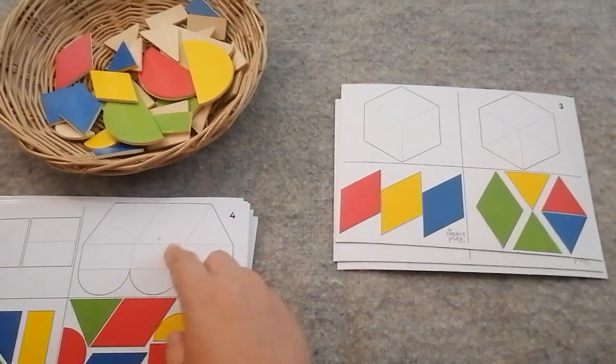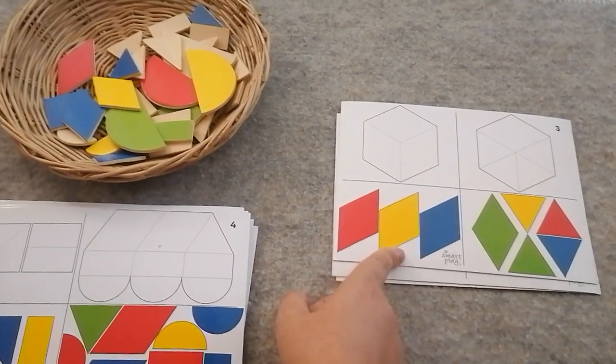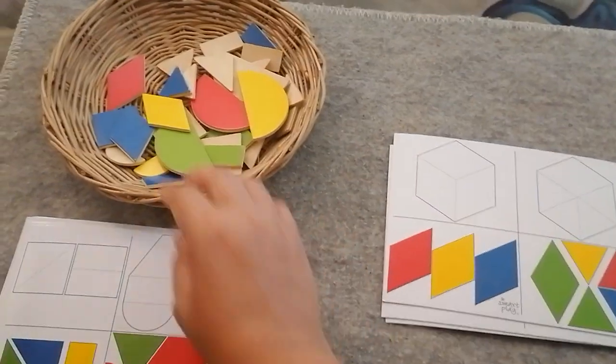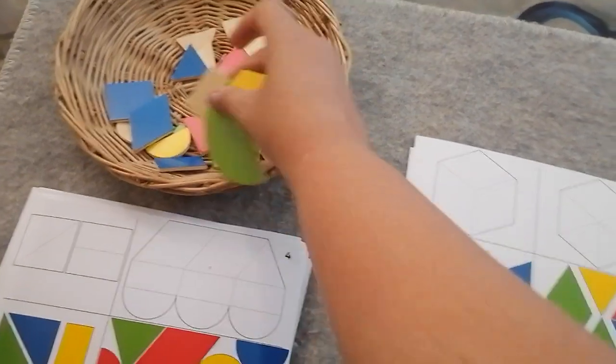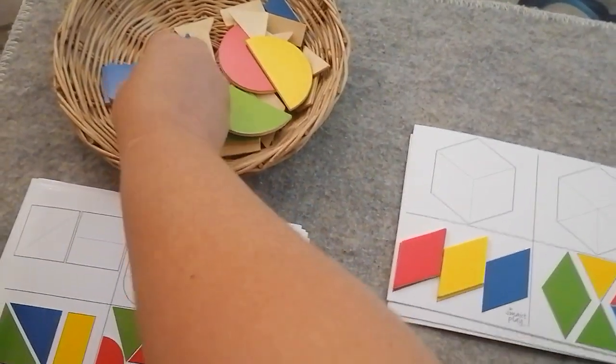But I am going to do this one. So I need a red diamond, a yellow diamond, and a blue diamond. See, a red diamond, a yellow diamond, and a blue diamond.